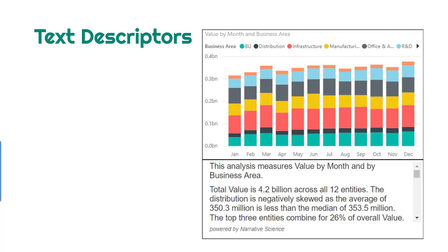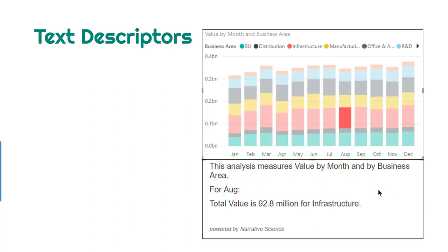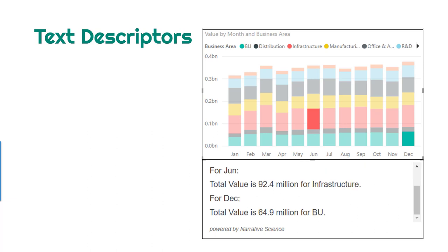Here is another visualization. The top one is the same chart we saw earlier. At the bottom we have a special thing called a text descriptor. Whatever is being shown in the chart on top, it describes it in simple language. Right now nothing is selected, so it is trying to describe the whole chart. But when I click on a particular component of the chart, it is actually describing it and showing the value for that particular month and for that particular business area. This works across all components of the chart, including multi-select where it shows you values for June and December for different views.